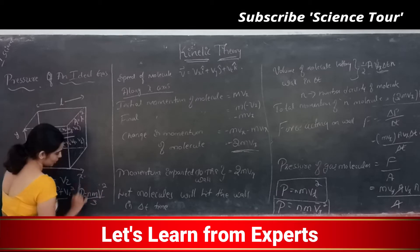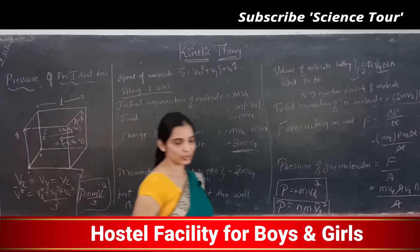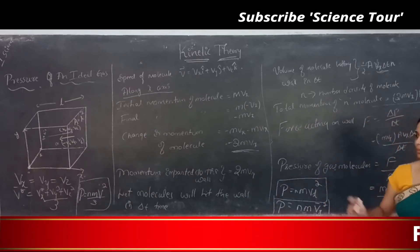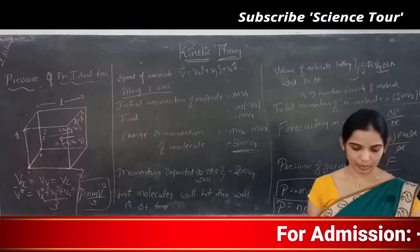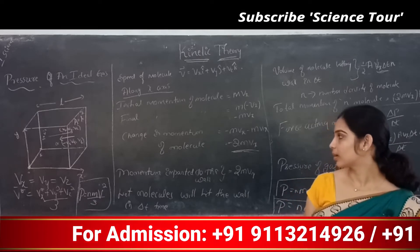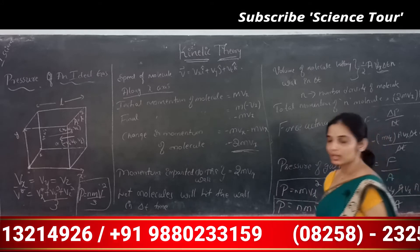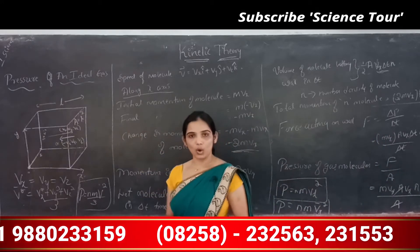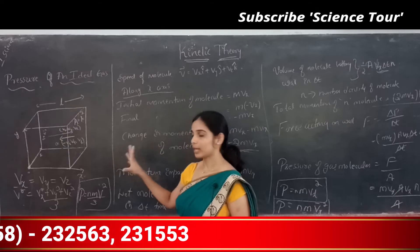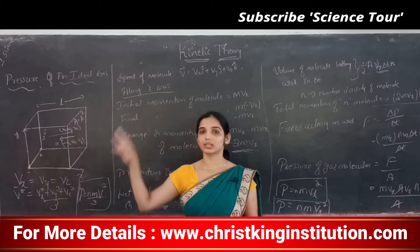Therefore, the pressure of an ideal gas can be written as P = (1/3)·n·m·V². This is the pressure of the ideal gas. The derivation is important, but this final expression P = nmV²/3 is very important.